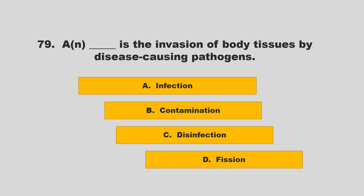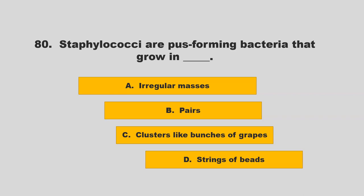A blank is the invasion of body tissues by disease-causing pathogens. Options: infection, contamination, disinfection, or fission. The correct answer is A: infection. Staphylococci are pus-forming bacteria that grow in blank.